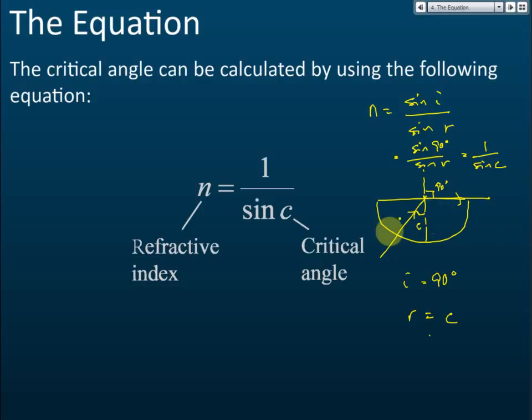And c is the critical angle. So this is the formula or equation that we are going to use to find refractive index from critical angle. n equals one over sine c.